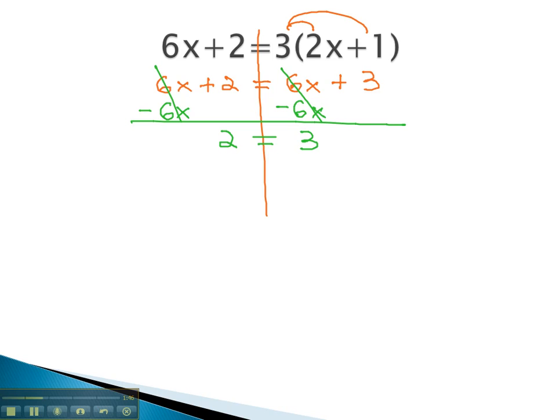This is interesting. The variable has subtracted out completely. What we're going to be interested in is this resulting equation. This says 2 equals 3. Notice 2 does not equal 3. That's a false equation. If this 2 equals 3 is false, then the original equation must also be false as well.